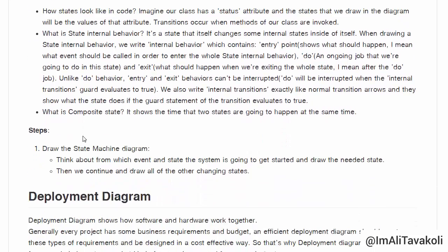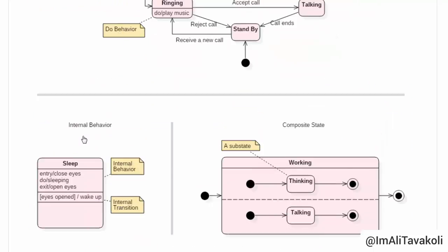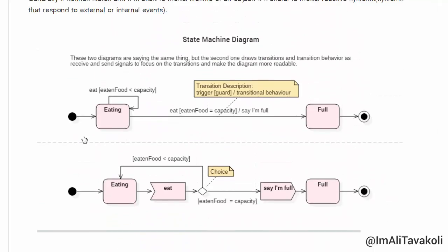Let's see what are the steps to draw the state machine diagram. First, think about from which event and state the system is going to get started. And draw the needed state. Then, we continue and draw all of the other changing states. So, let's go all the way up here and take a look at our examples.